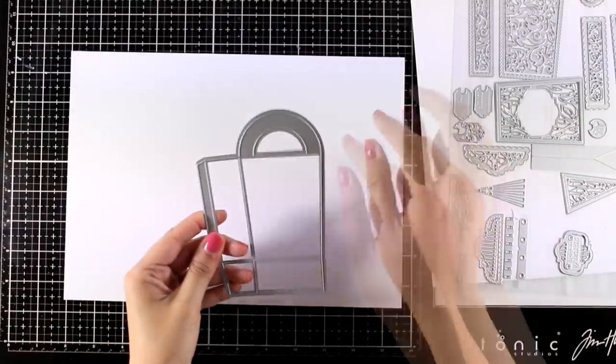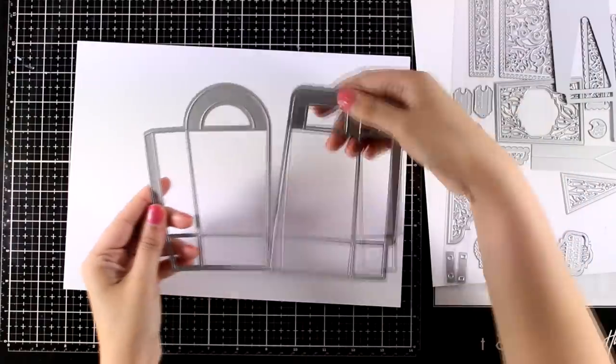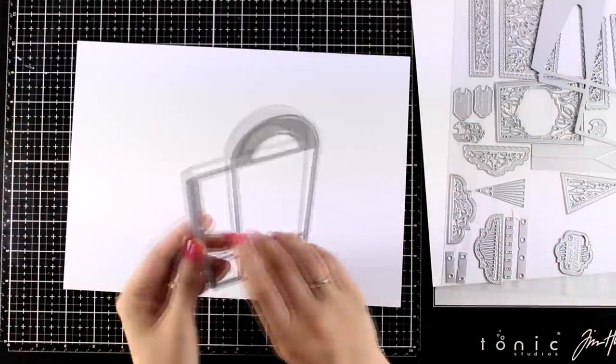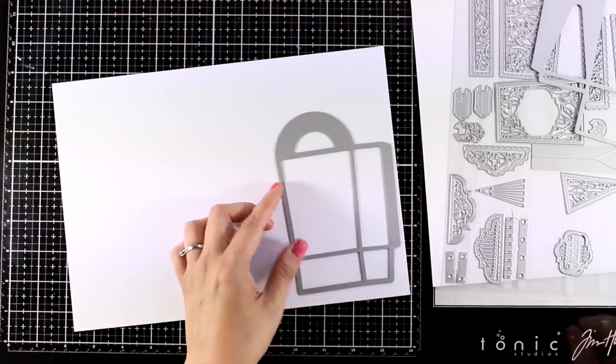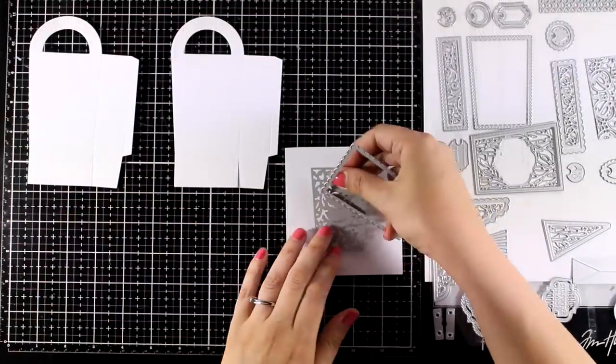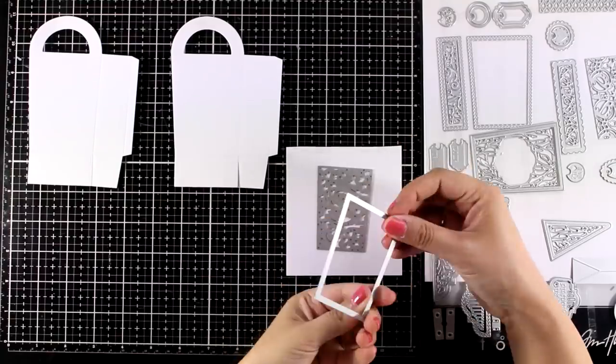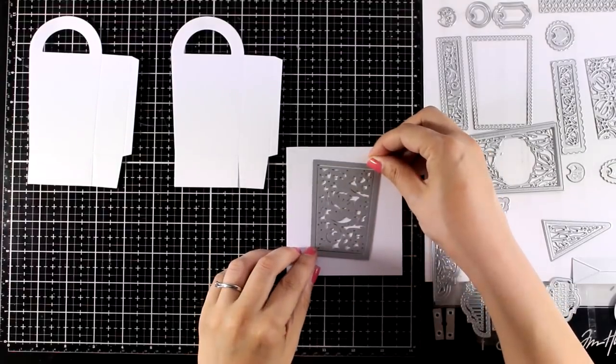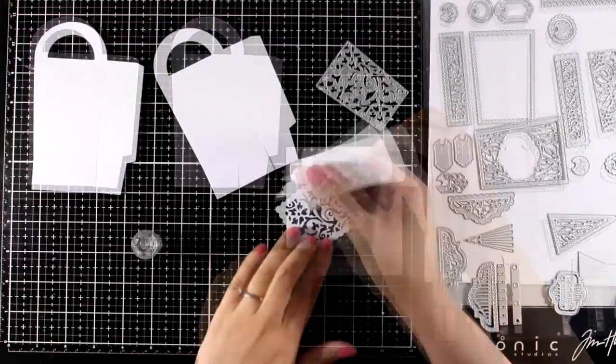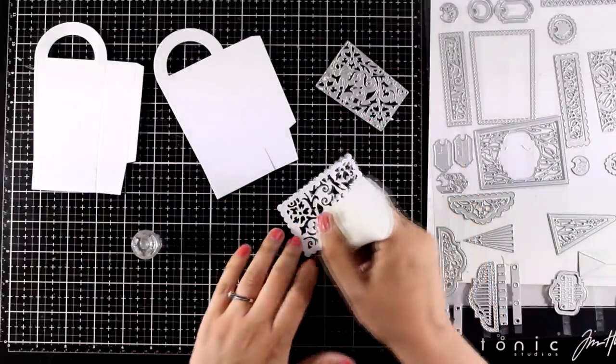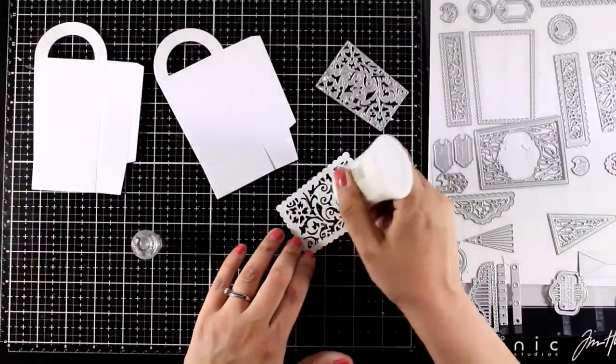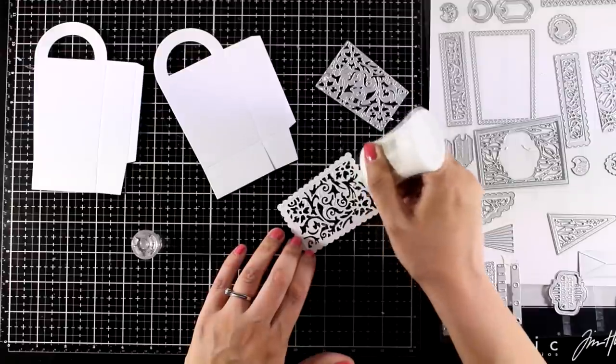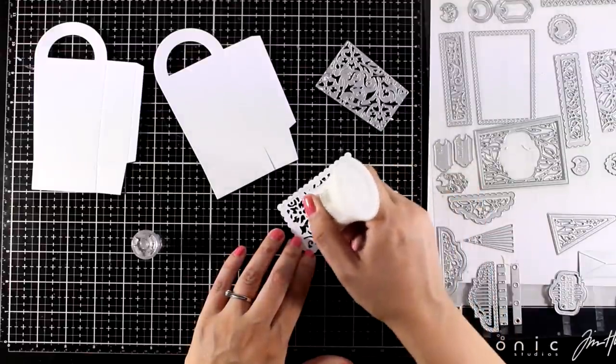For my second bag I'm going to use the die with the rounded handle. Remember there's another one that is more squared up. I cut it out twice from white cardstock and now I'm going to create a panel. So I'm combining two of the dies here. The one on the outside creates a lovely scalloped edge while the other one that looks like a lace creates this beautiful design with a lot of flowers and leaves.